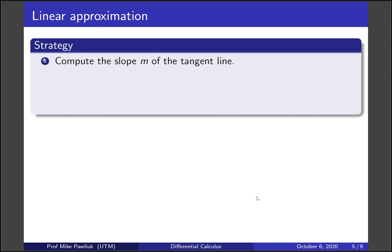So our strategy is first compute the slope of the tangent line using derivatives. The second observation is that the tangent line will go through 1, 10.